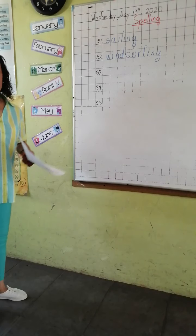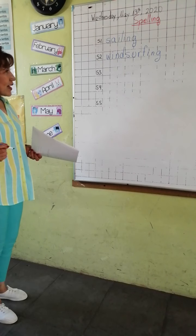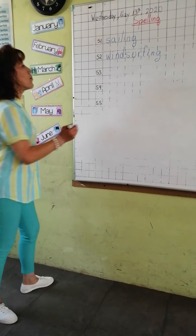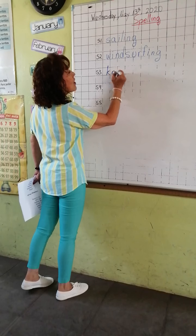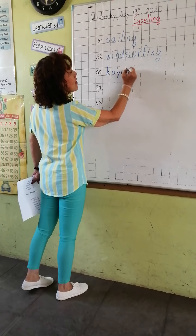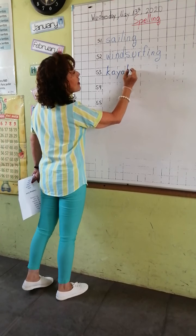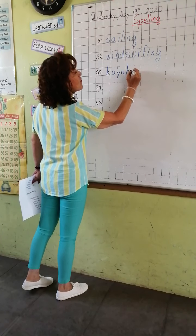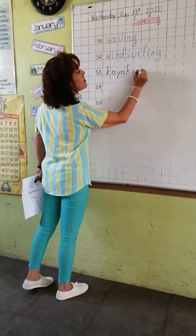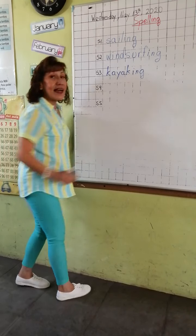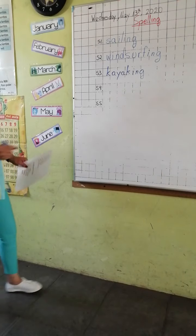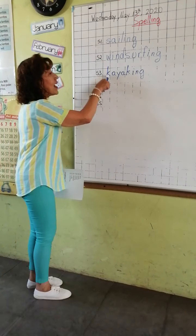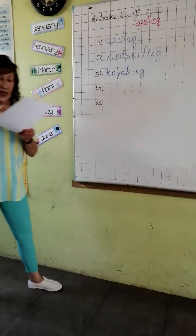The next word is kayaking. Tell me: K, A, Y, A, K, I, N, G. Kayaking. Very good. This is letter K.